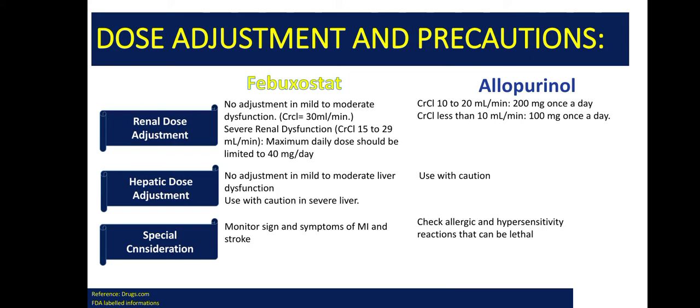Coming to hepatic dose adjustment: no adjustment is needed if the patient is in Child-Pugh class A or B, but use with caution in severe liver disease. For allopurinol, we also have to use with caution. As a special consideration, we have to monitor for signs and symptoms of MI, atrial fibrillation, and stroke if febuxostat is prescribed. For allopurinol, we have to watch for allergic and hypersensitivity reactions that can be lethal.